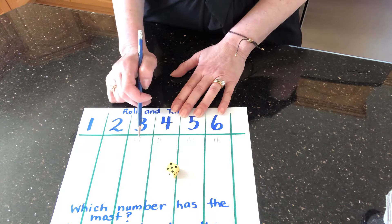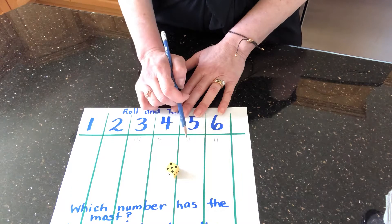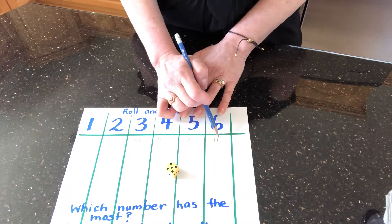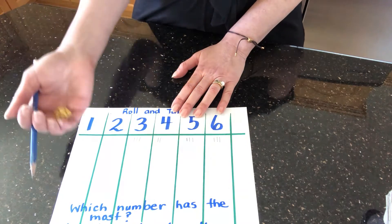One, two, three, four, five, six, seven, eight, nine, ten, eleven, twelve, thirteen, fourteen. I have six more rolls.